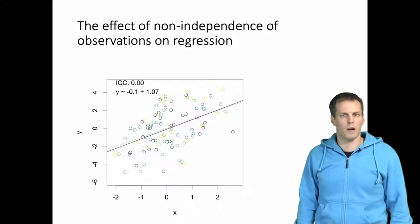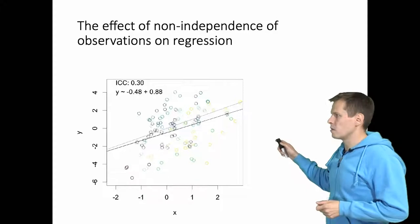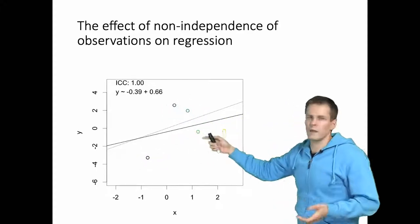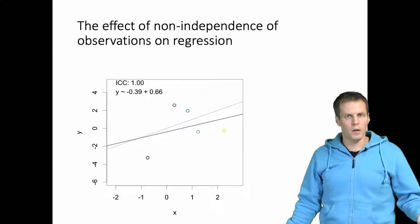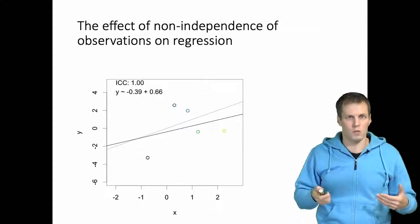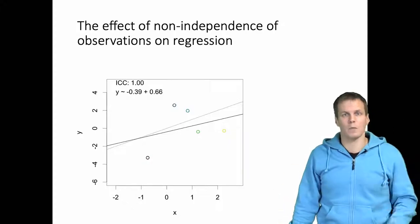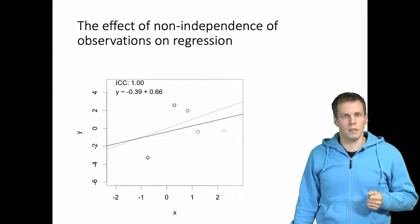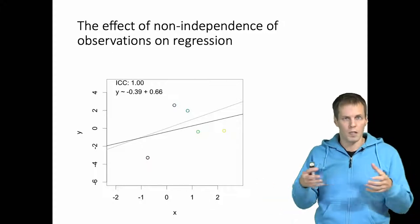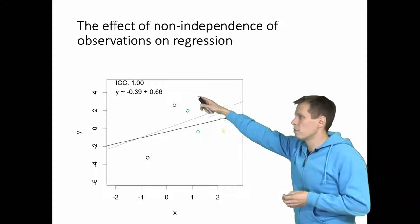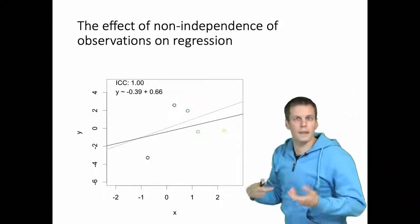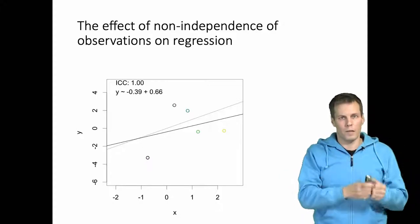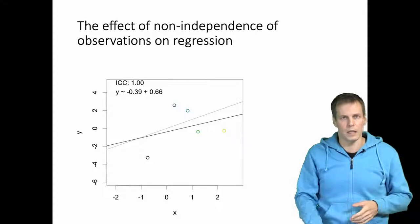When we increase the intraclass correlation of both variables, we can see clustering: the yellow observations go here, the purple observations go here, and the green observations go here. Ultimately, when intraclass correlation reaches one, we have just five observations that are repeated. When both variables have clustering effects, the regression coefficients — both the intercept and the slope — become less and less precise, though they remain consistent and unbiased.